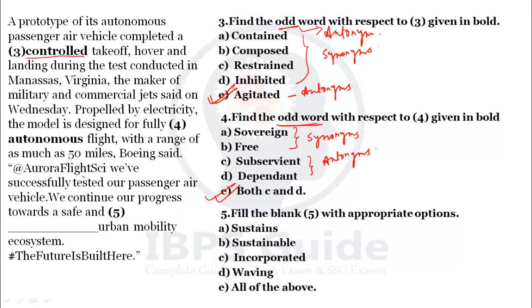Question five: fill in the blank. 'Boeing said, Aurora Flight Sciences: we have successfully tested our passenger air vehicle and we continue our progress towards safe and dash urban mobility ecosystem.' Options include sustainable, incorporate, and waving. Since this ecosystem should have no air pollution and represent sustainable development, the correct answer is B — sustainable. Safe and sustainable urban mobility ecosystem.